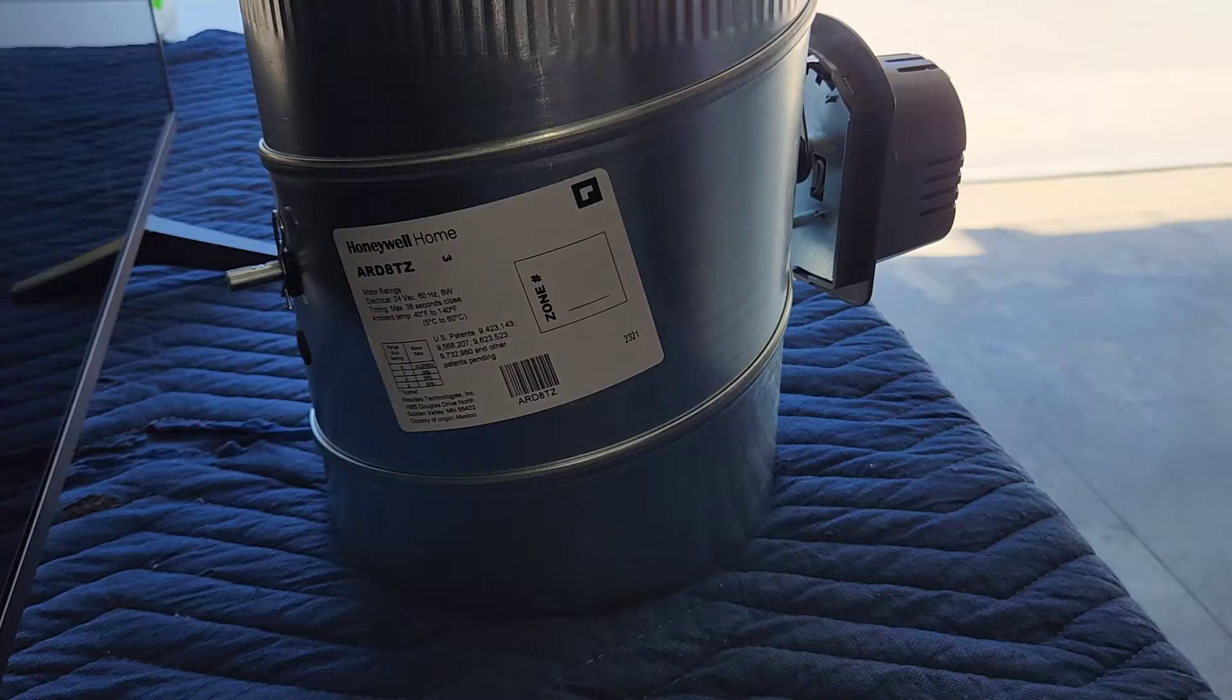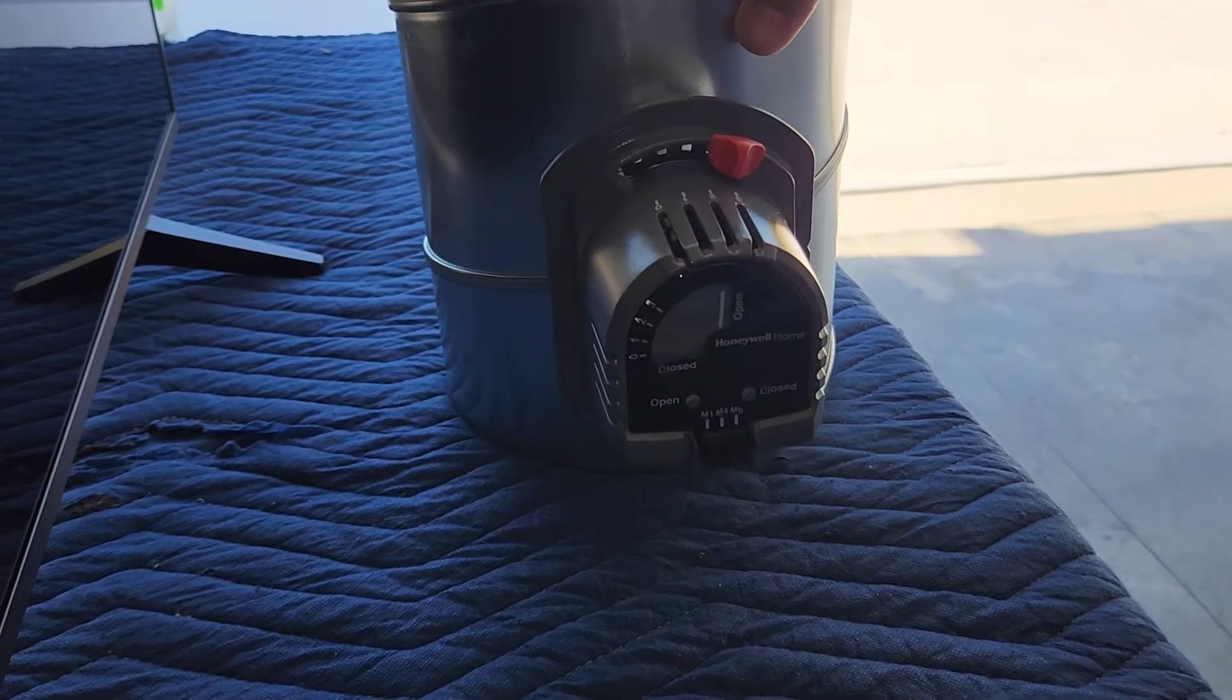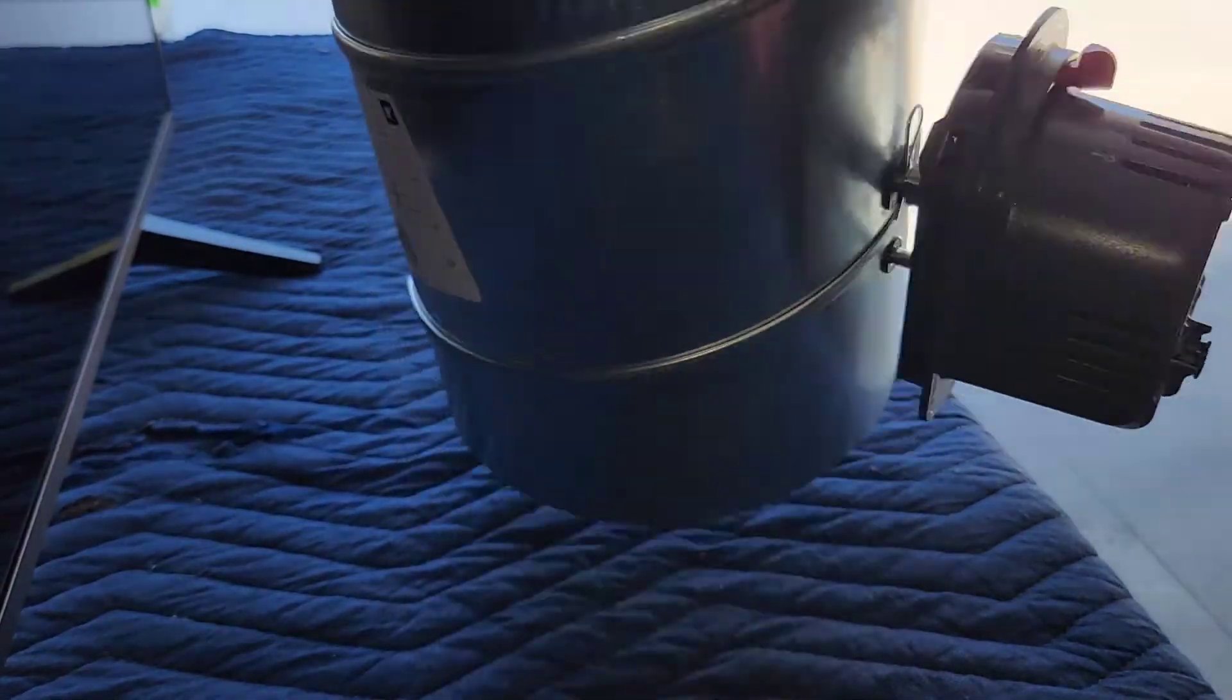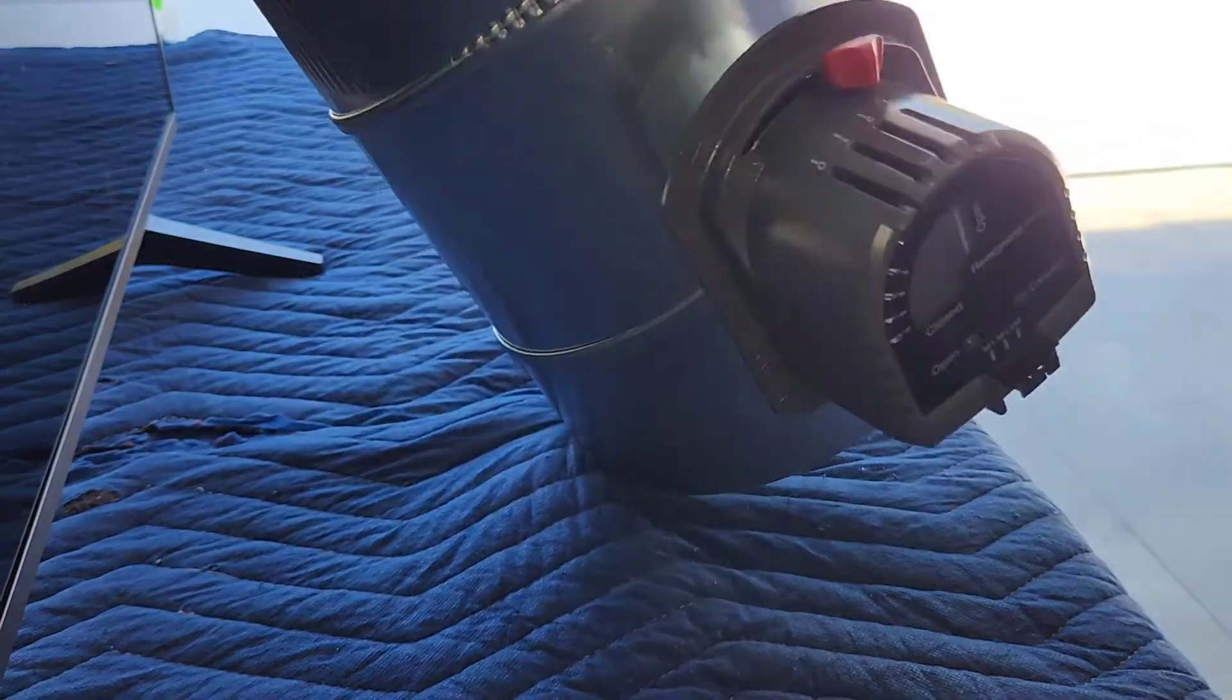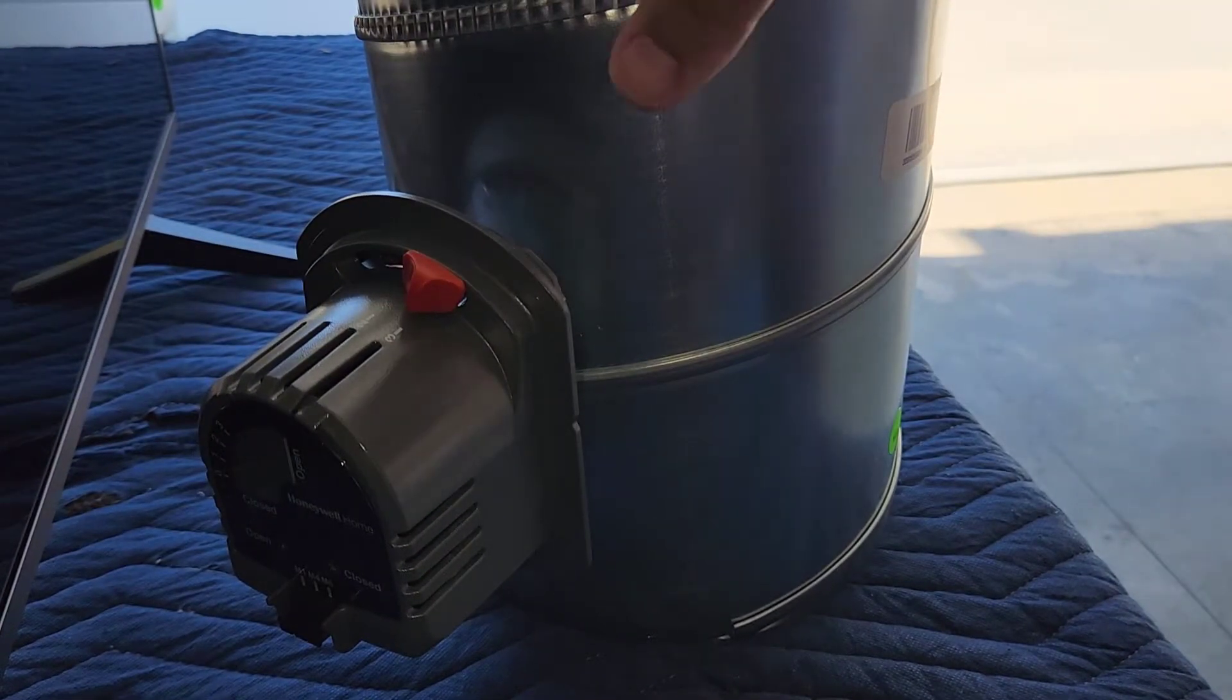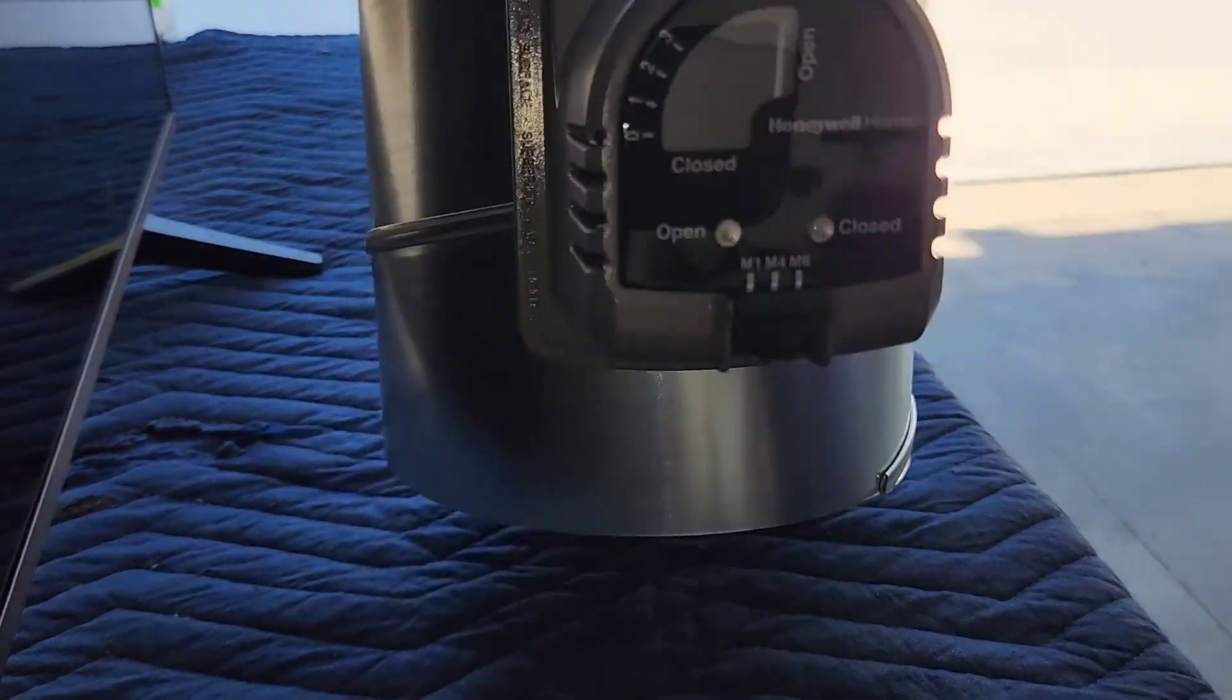And I know there's going to be some comments in the section about, well, you can just buy a Honeywell damper that comes ready to go for fresh air, but it doesn't have this actuator on it. And a lot of times they're not available in the supply house. They come with other parts and a kit that you may or may not need. So that's why sometimes if you're in a bind, you can use a zone damper instead.